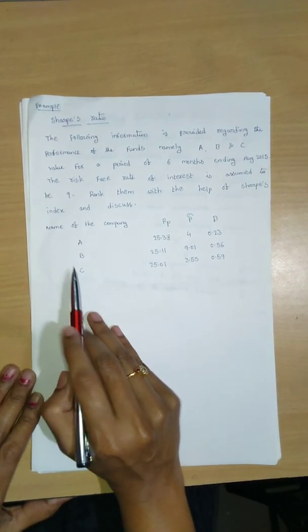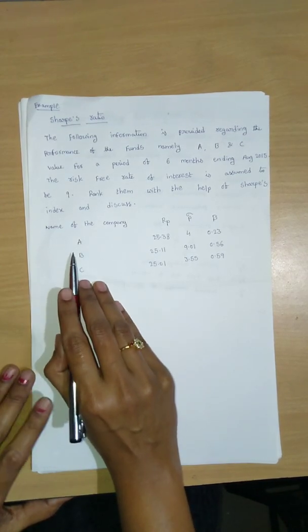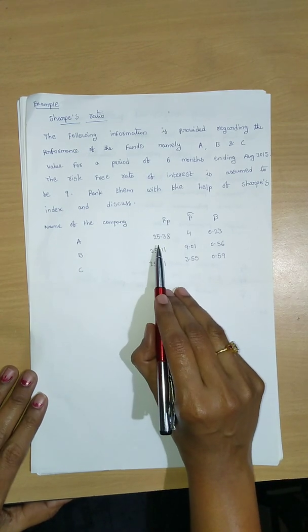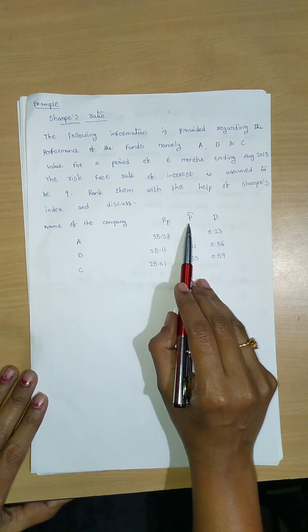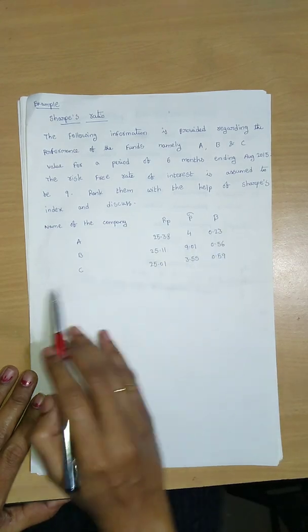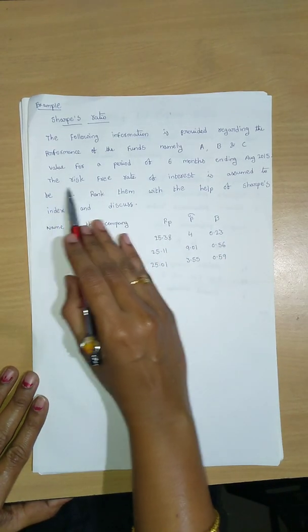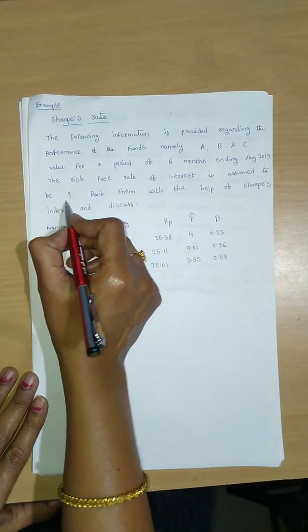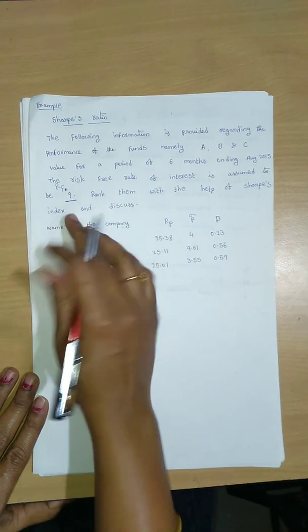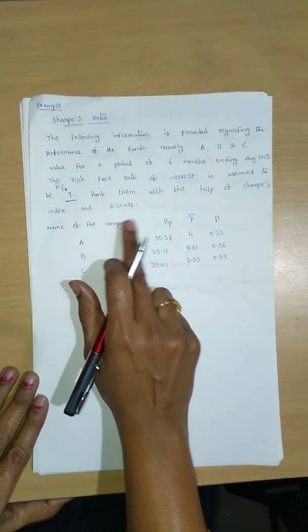So here there are three companies. The risk-free rate of interest is assumed to be 9, so here 9 means risk-free rate of interest, RF. So RF is 9, okay?